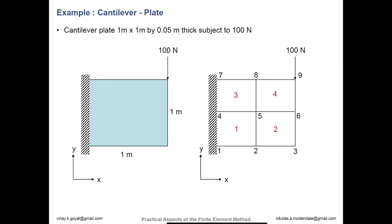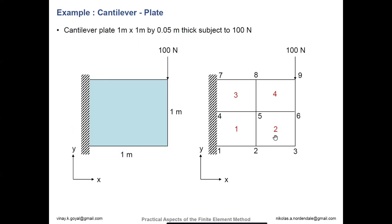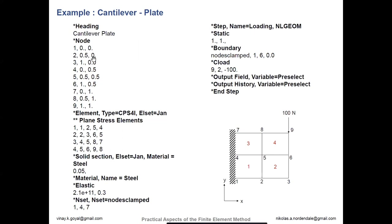Here's a quick example: a cantilever plate with a load applied, fixed on the left side. The nodes are numbered — you can use any numbers you want, like 5, 10, 20, 15, or consecutive numbers. We've taken the domain we're trying to analyze and subdivided it into four elements — that's why it's called finite elements, because we discretize the domain into a finite number of subdomains. These four elements have node numbers associated with them, and we're applying 100 Newtons. Once you've assigned numbers to each node, you're ready to write the input file.